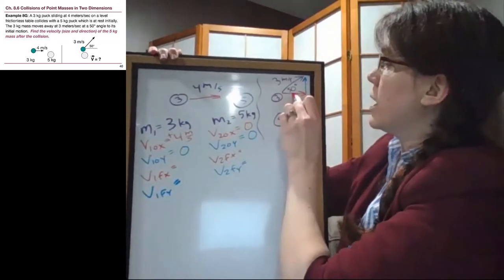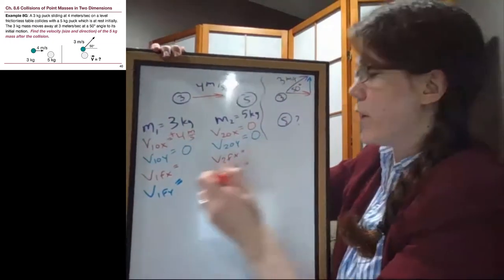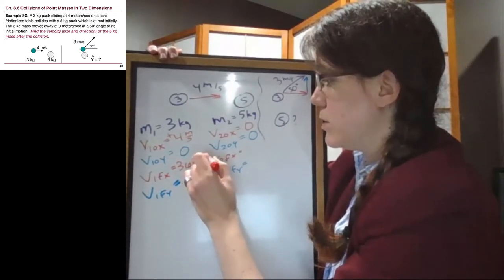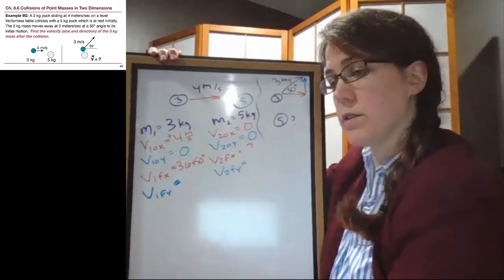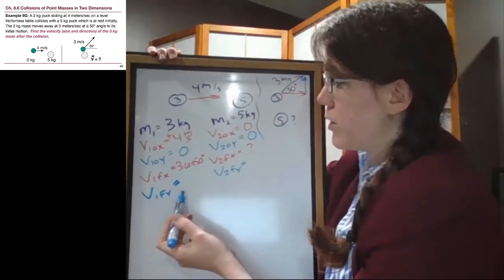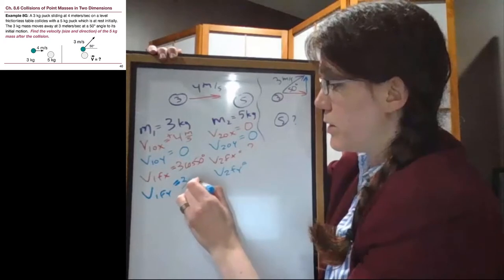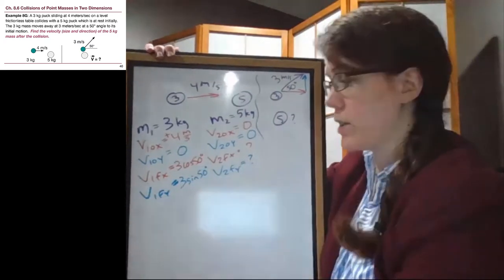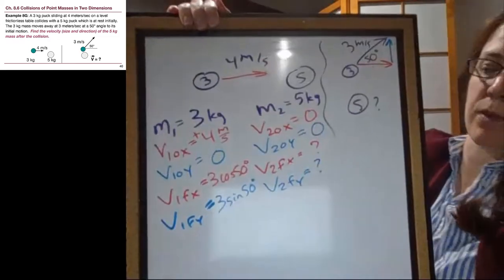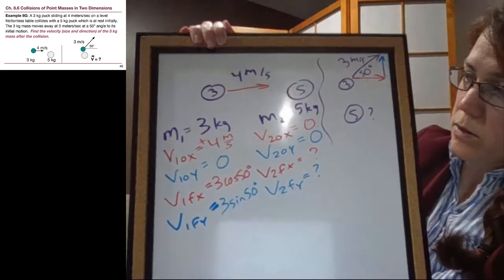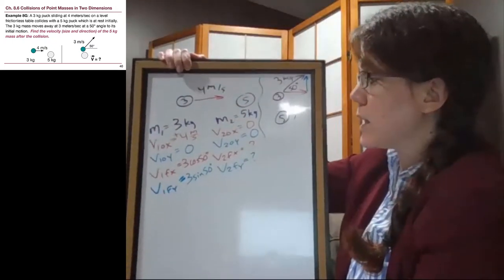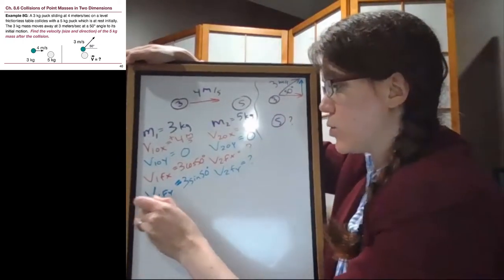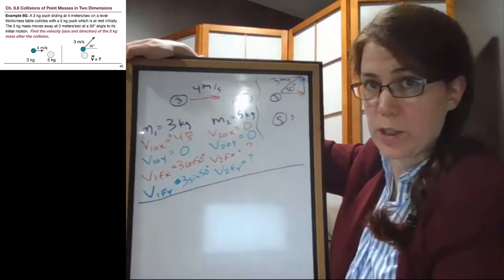Then if we look over here, the x component of that final velocity is three cosine 50 degrees. This is an unknown for us. For the v1 final in the y direction, that's going to be three sine 50 degrees. And the final velocity in the y direction is unknown to us. So we have this list of given information, and it will help us sort through things as we look at the two different equations here.